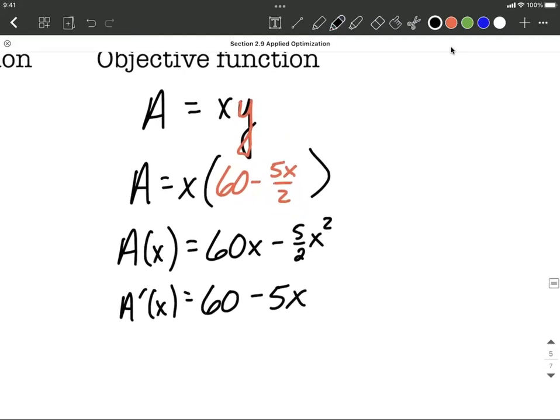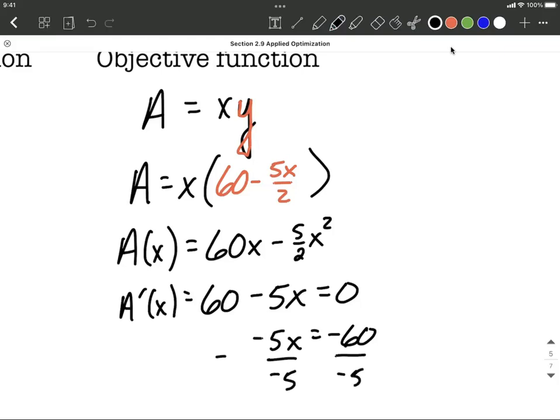From here I want to find critical values. So to find those, I'm going to set this equal to zero and work on solving it down. So I'm going to subtract the 60, move it to the other side, and divide both sides by negative five. So this will make x on the left hand side is equal to, looks like, 12 on the right hand side.